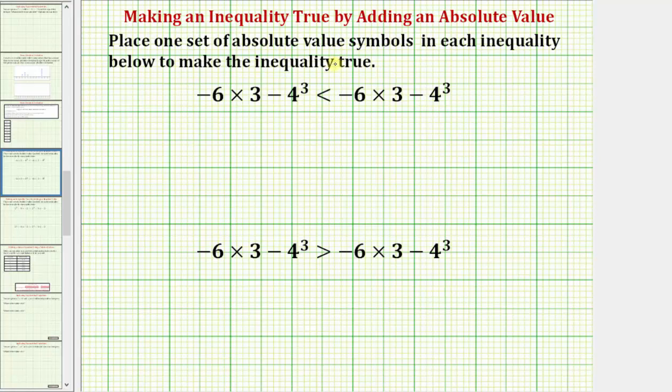We want to place one set of absolute value symbols in each inequality below to make the inequality true. Notice how right now the expression on the left and the expression on the right are exactly the same, so they're actually equal. We want the left side to be less than the right side for this first inequality, and the second inequality we want the left side to be greater than the right side.